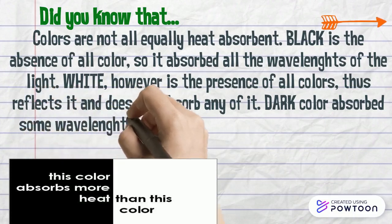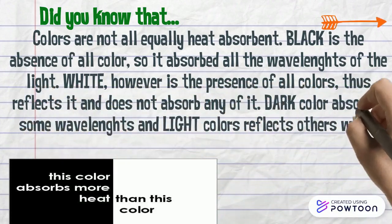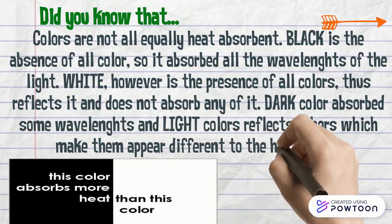Dark color absorbs some wavelengths, and light colors reflect others which make them appear different to the human eye.